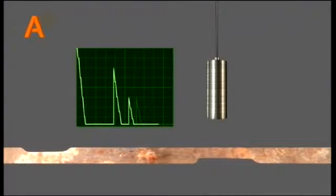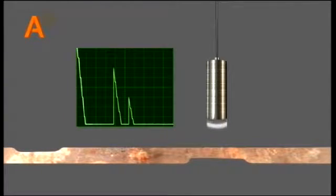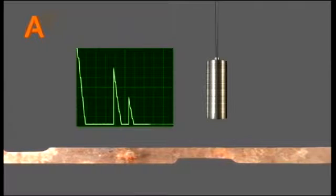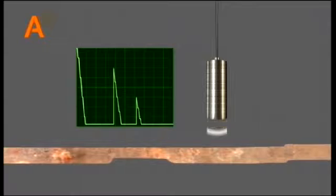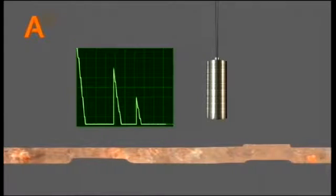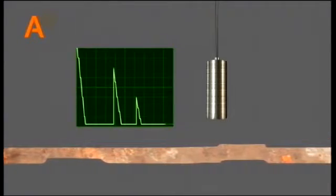A part of the ultrasonic pulse continues in the pipe wall material and is reflected by the pipe outside surface. This can be seen as the second pulse on the screen, providing information about the wall thickness and possible external corrosion.